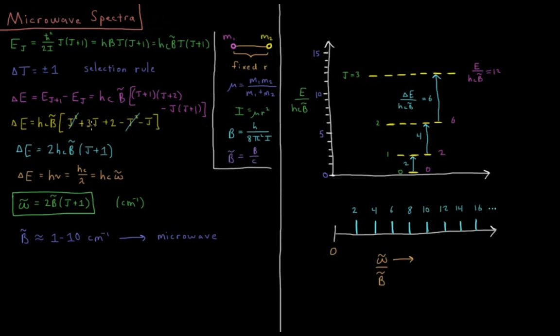The j squareds cancel, 3j minus j is 2j, 2 is 2. Factor out a 2, delta e equals 2 hc b bar times j plus 1. So that's the energy in terms of joules if we're using SI units here.